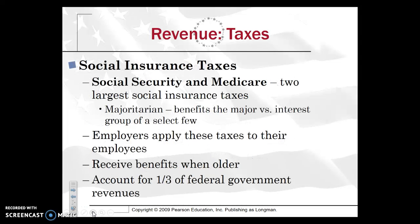Other revenue taxes include social insurance taxes — you pay Social Security and Medicare taxes, which are two of the largest. This is really a majoritarian tax in that it benefits the majority versus the interest group of a select few. When you hit age 65, you'll get your Social Security and Medicare that you've been paying into. Employers apply these taxes to their employees as well, and they account for about a third of federal government revenue.